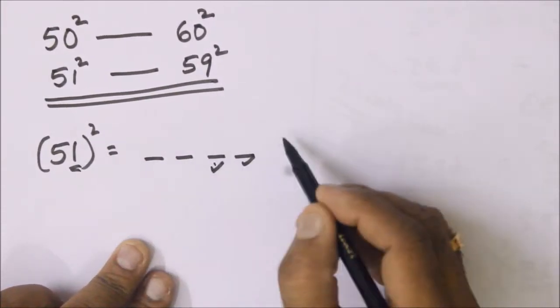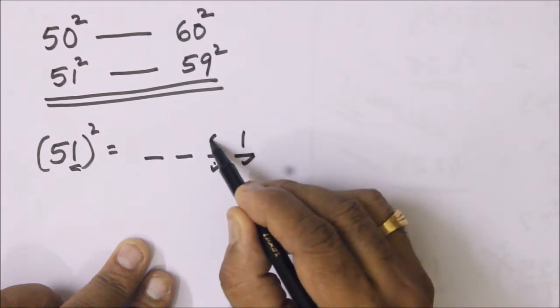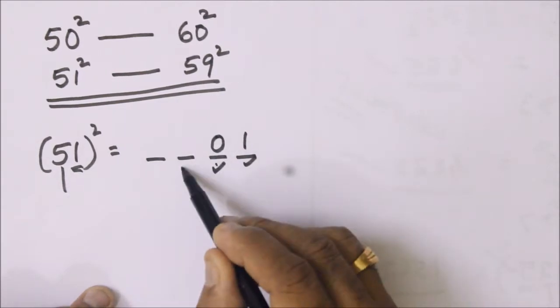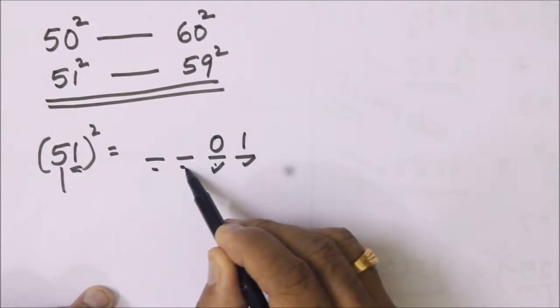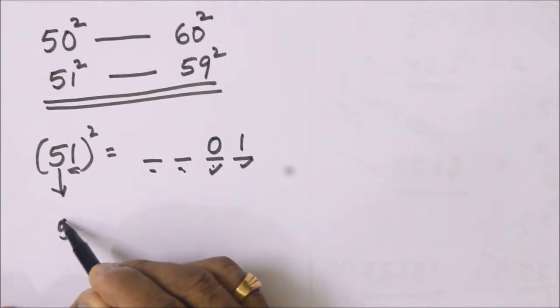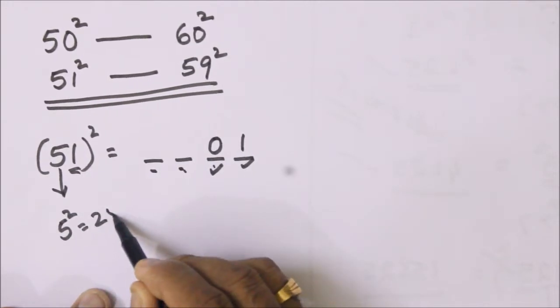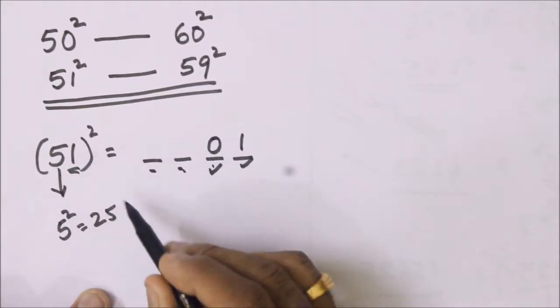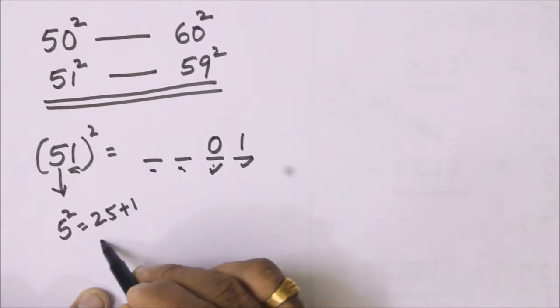Now these two places, hundreds and thousands, we take the 5 square which is 25 and add the units place in the square root number, that is 1. That is 26. They take the position of thousands and hundreds.